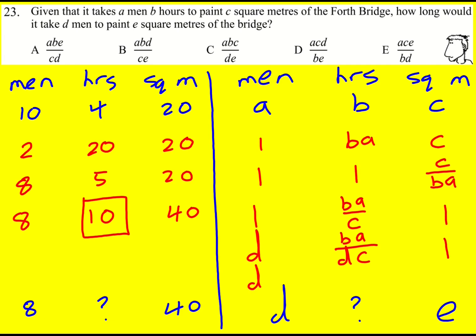And then finally, if I want E square meters, I'm going to times the hours by E. So I'm going to get BAE over DC. That is going to be my answer, just got to find it.